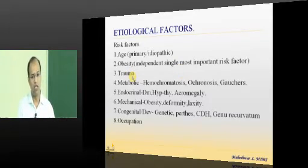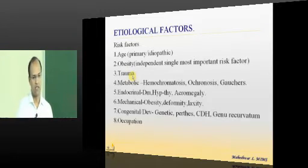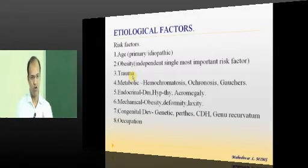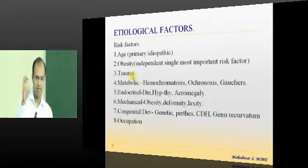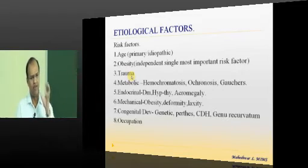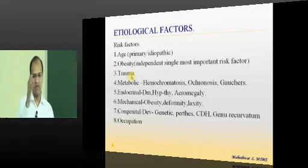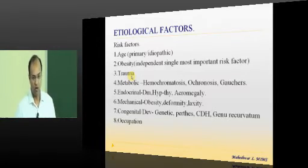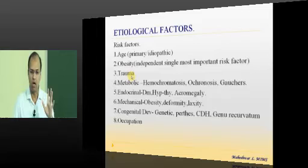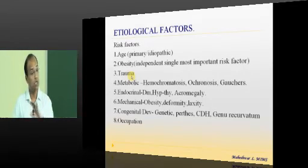Trauma is another risk factor. Injury to a joint causes haemarthrosis — blood collecting in the joint — which is detrimental to cartilage, which requires synovial fluid for nourishment. Trauma can also cause direct cartilage damage. Unlike the liver, which can regenerate even if 75% is removed, cartilage cells have very little regenerative capability. Once cartilage is gone, the remaining chondrocytes cannot form new cartilage.